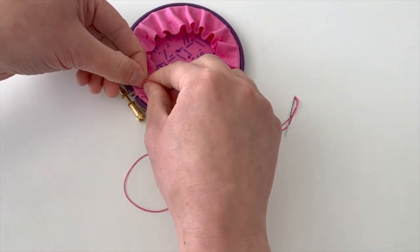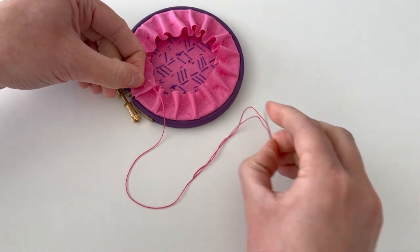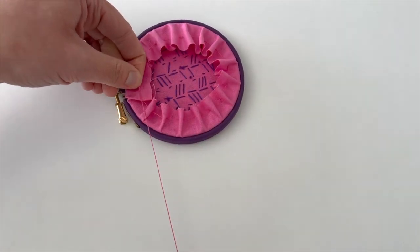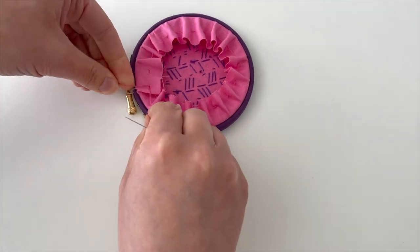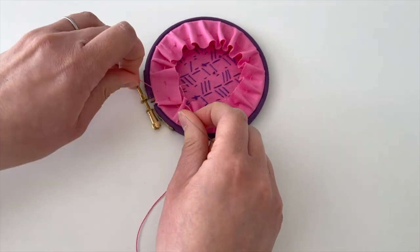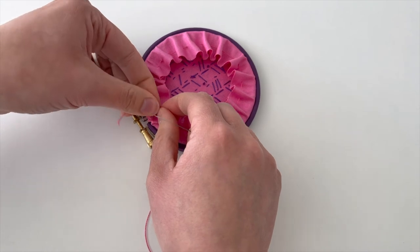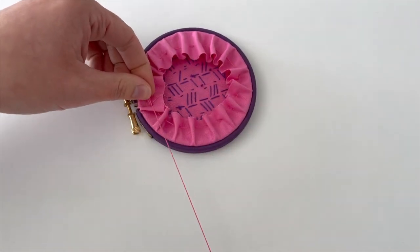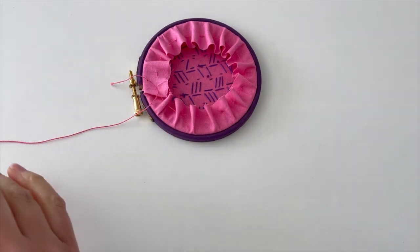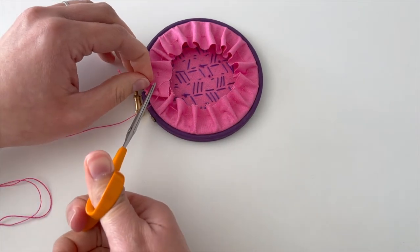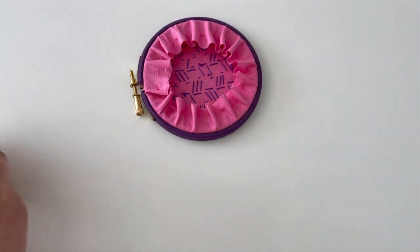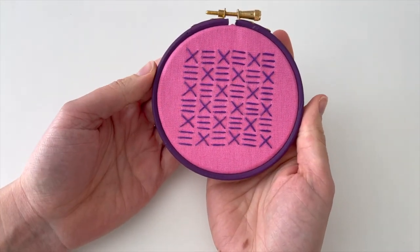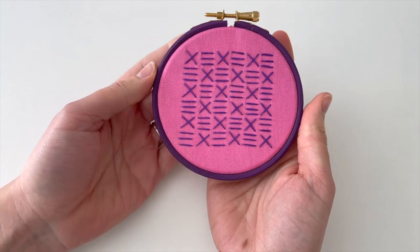There we go, that's it. Now we are going to trim the ends. It's ready to hang. You could hang a ribbon in the top if you want or just leave it like that, but that's our lovely brick and cross stitch hoop.